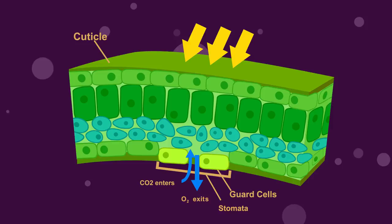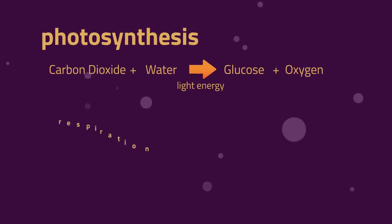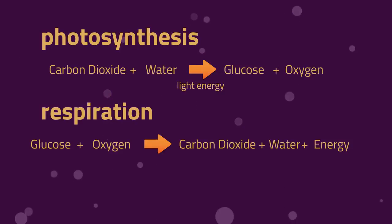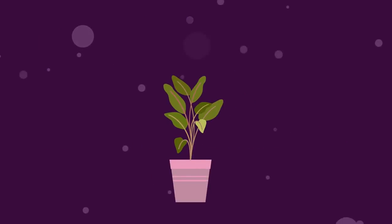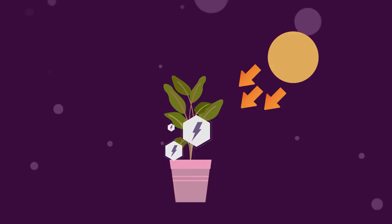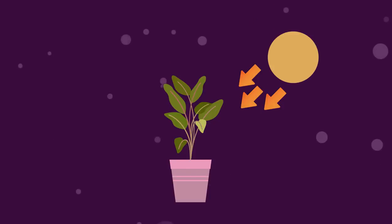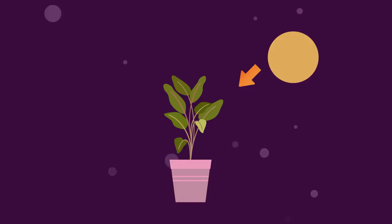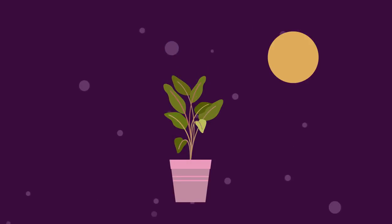Do you remember how photosynthesis works? Compare these two equations. You can hopefully see that aerobic respiration works in the opposite way to photosynthesis. Plants produce their food by photosynthesis and then through respiration release energy from it. But don't be confused — whilst plants do release oxygen as a byproduct of photosynthesis, they don't necessarily take in this oxygen for respiration. They just take in any oxygen from the air.